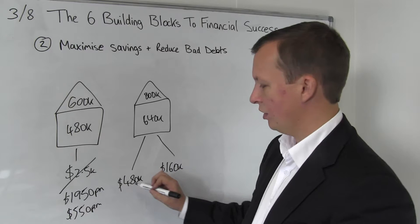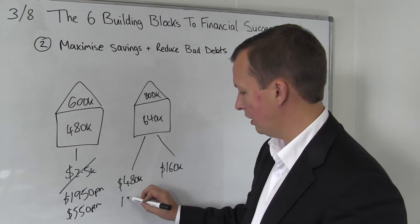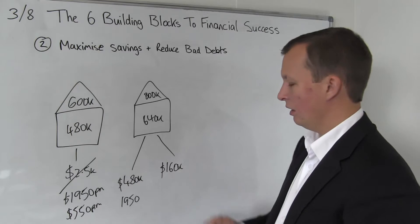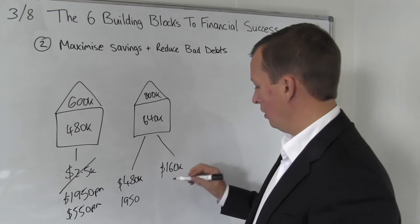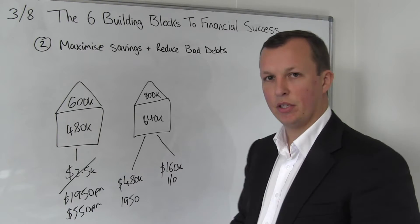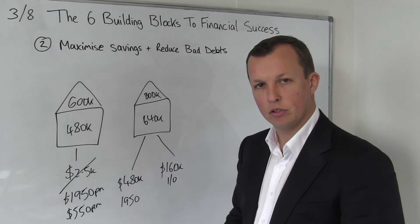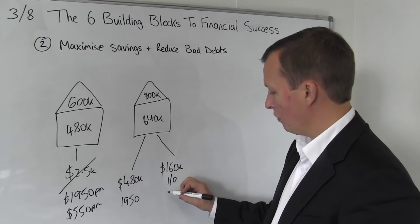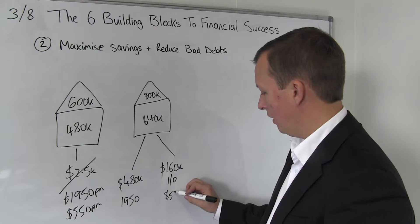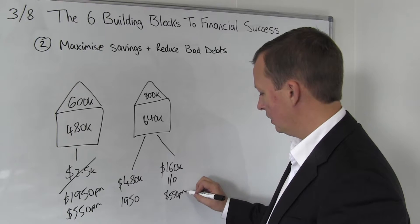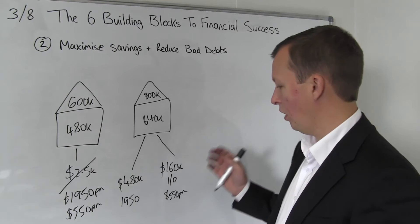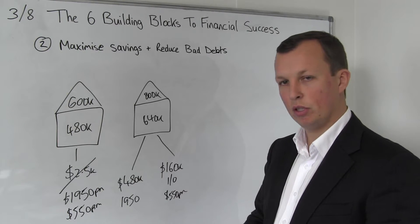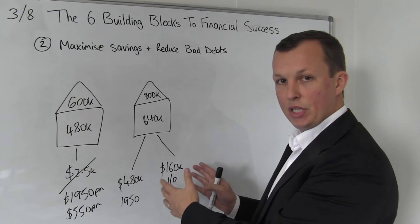The new repayments on the existing loan are $1,950 a month. The $160K loan, if we do interest only because we're going to use it for investment to build our wealth and free up cash flow, those repayments are about $550 a month. Under this example you've got the same repayments as on your original loan, but you've got more debt now.